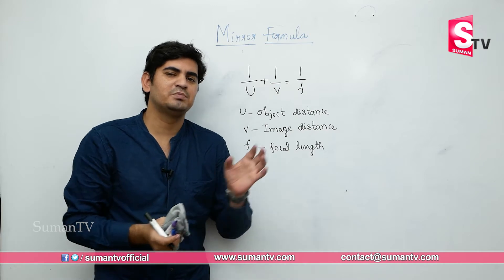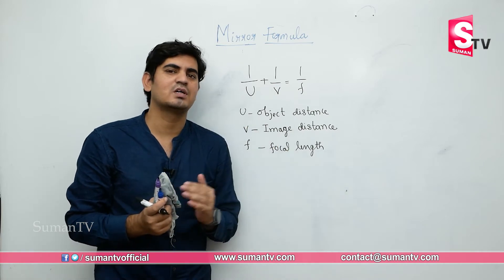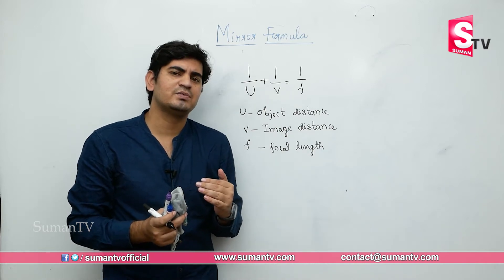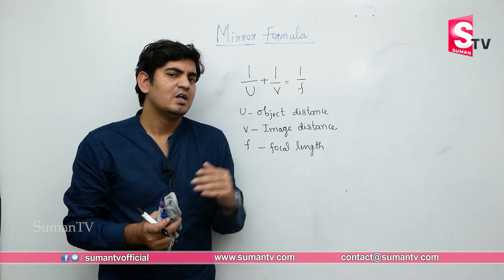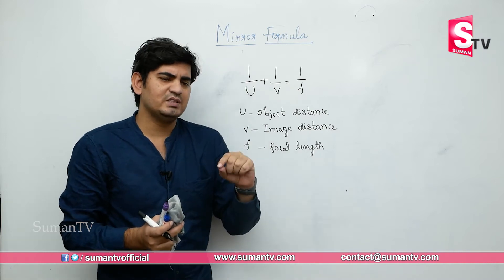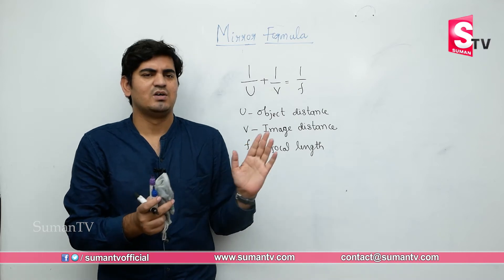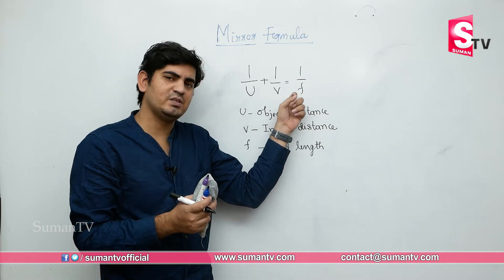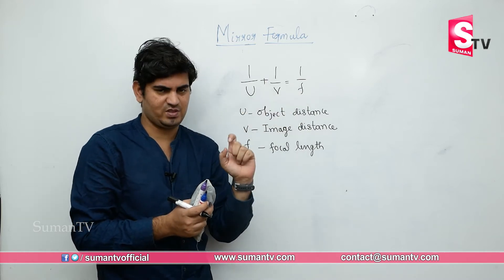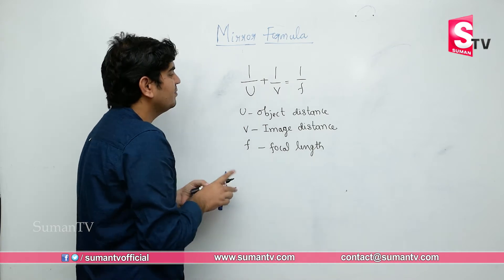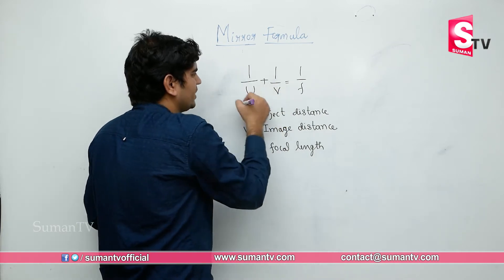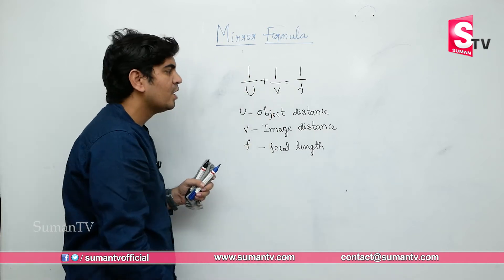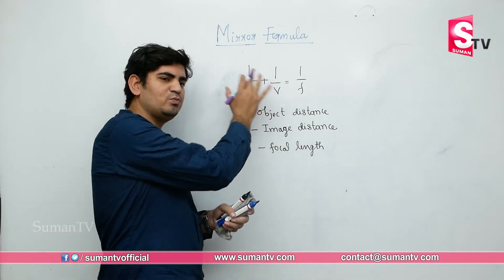Let us take one question: an object is placed in front of a concave mirror at a distance of 25 centimeter, and focal length is given as 4 centimeter. We are asked to find the image distance. Before substituting the values in the formula, we have to learn the concept called sign convention.